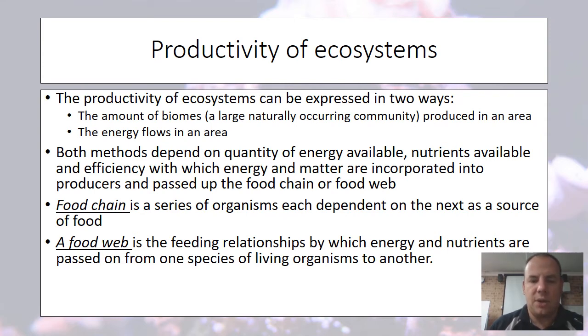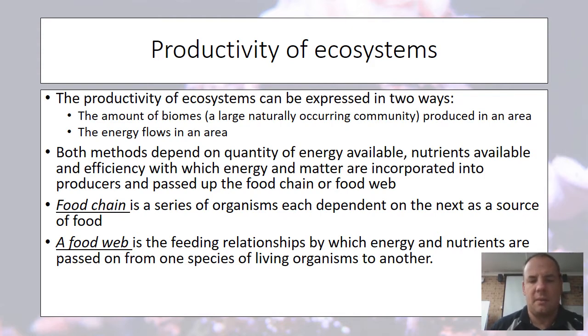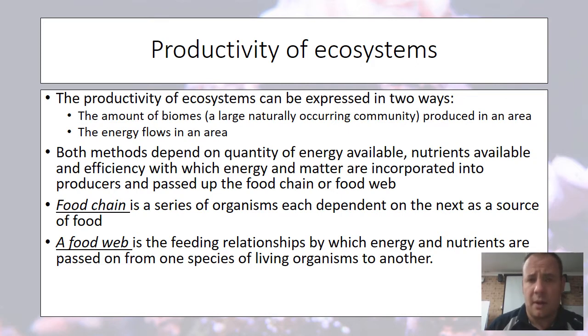A food chain is a series of organisms, each depending on the next as a source of food. A food web is the feeding relationship by which energy and nutrients are passed from one species of living organism to another.